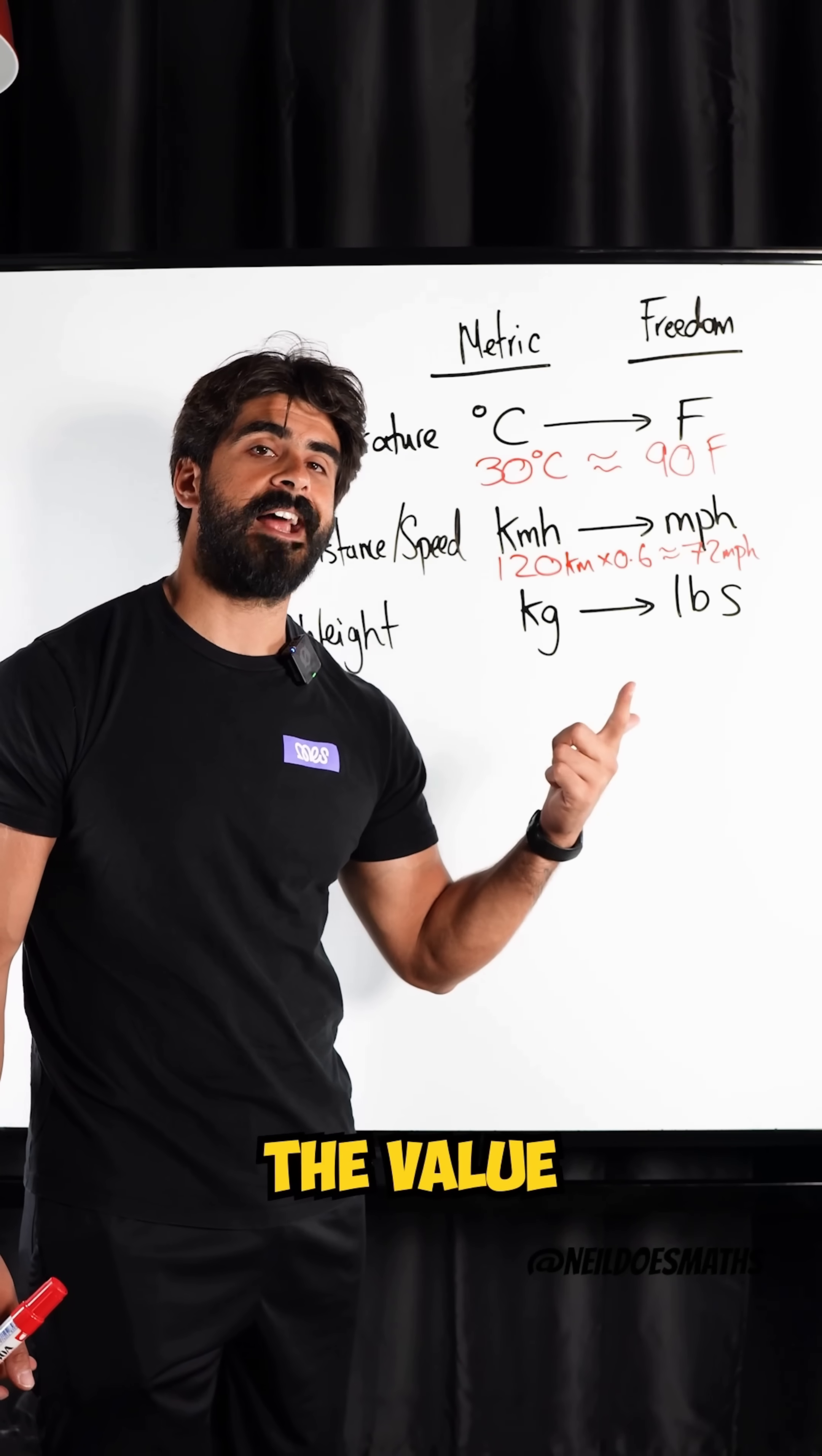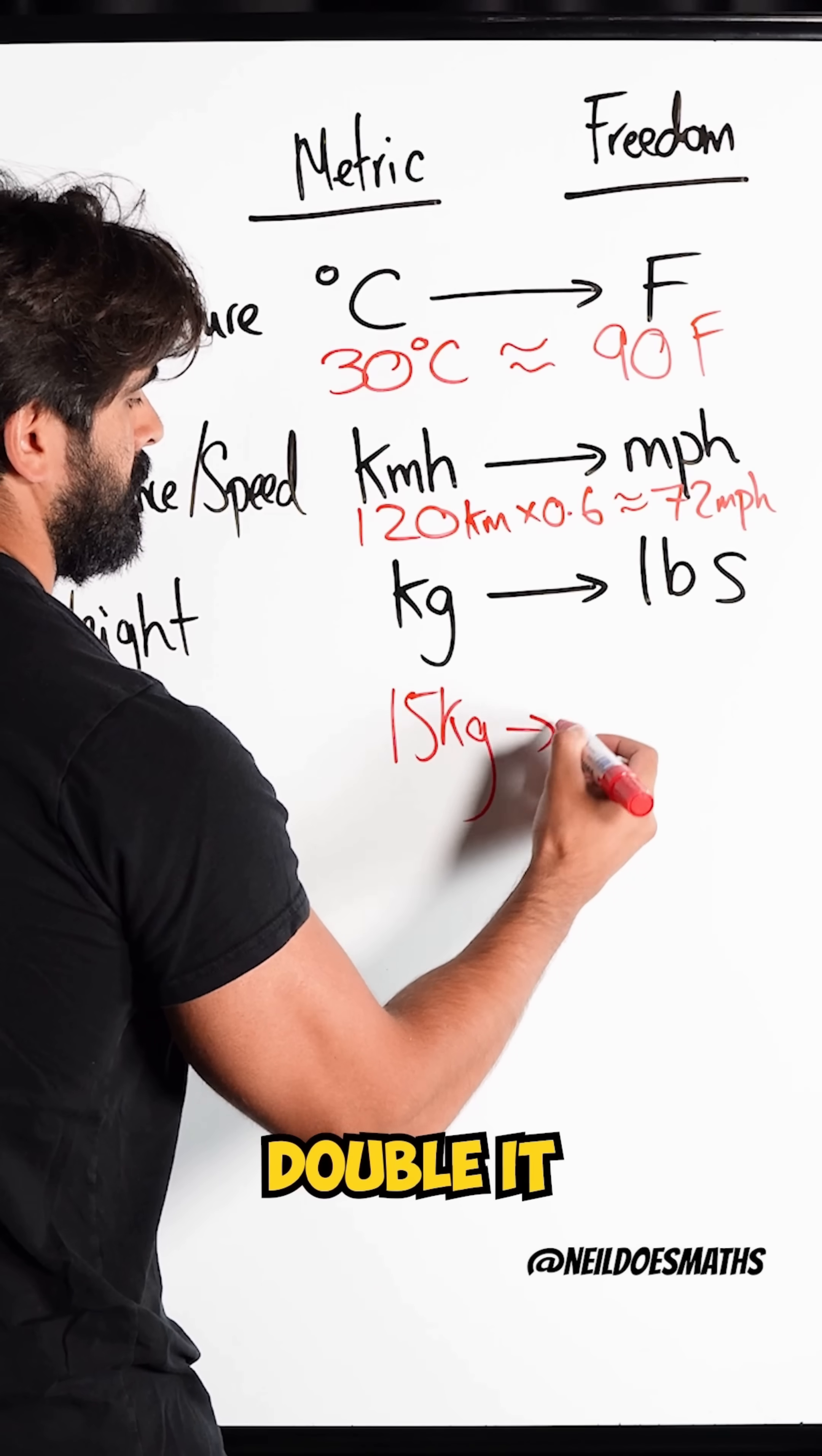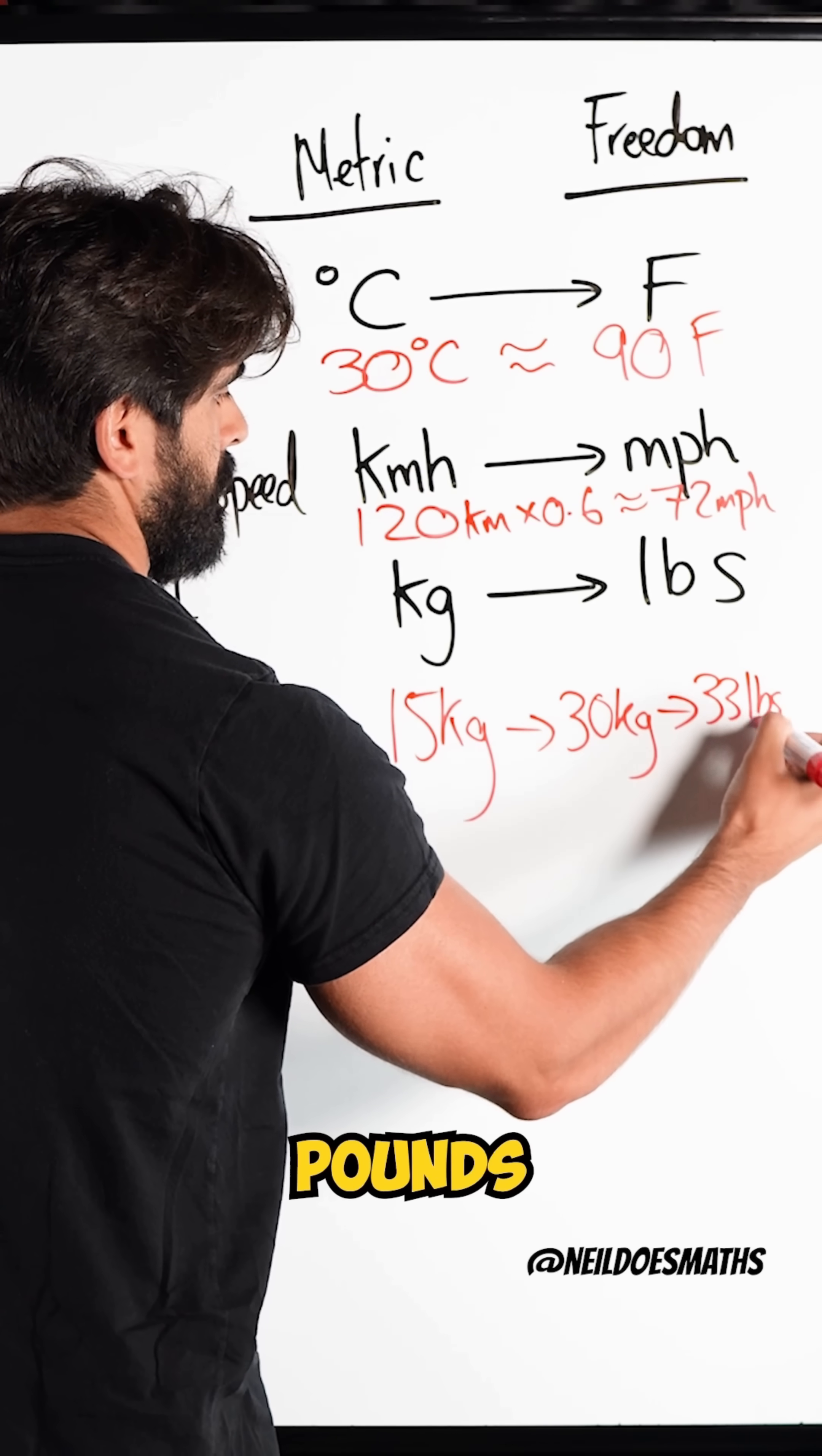You double the value and then add 10%. For example, you're taking a suitcase and it measures, let's say, 15 kilograms. You double it to 30 kg and then you add 10%. 10% of this is 3 and then you add it to this, you get 33 pounds.